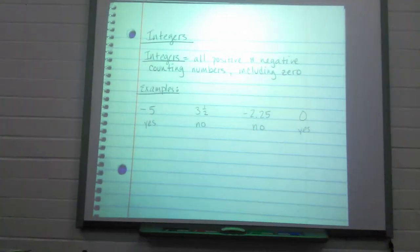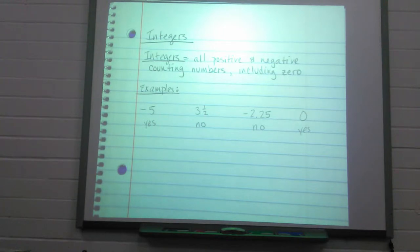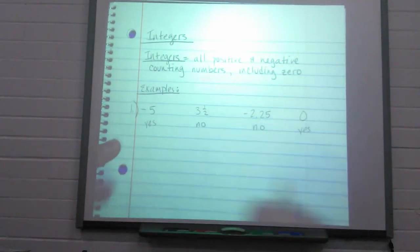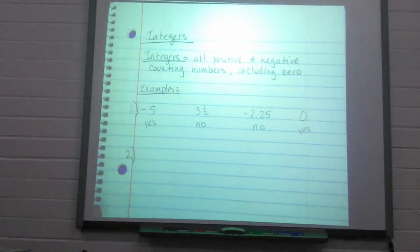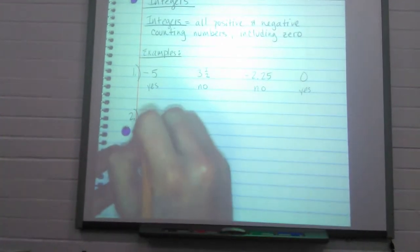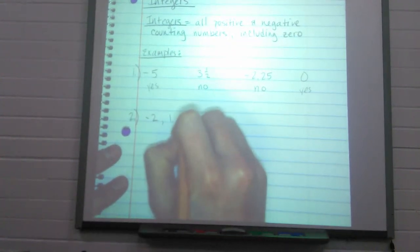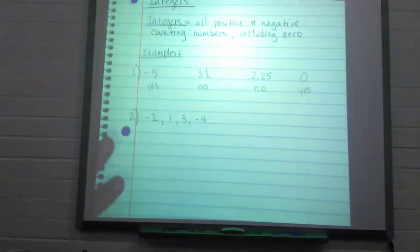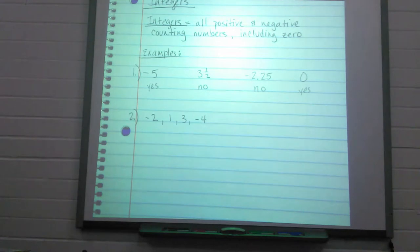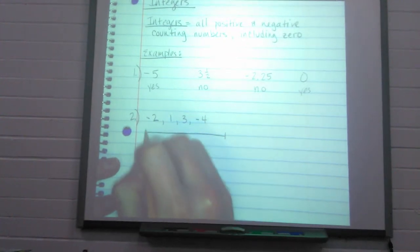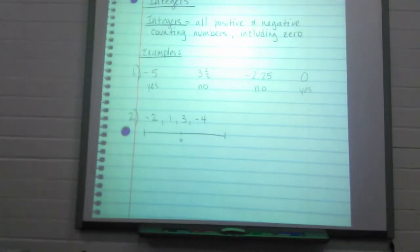That was the first part of our notes today. The second part, we are just going to place these integers on a number line. Let's say I have the numbers negative two, one, three, and negative four, and I need to put these numbers on a number line. I'll go ahead and draw a number line, and always in that middle you're going to put zero.